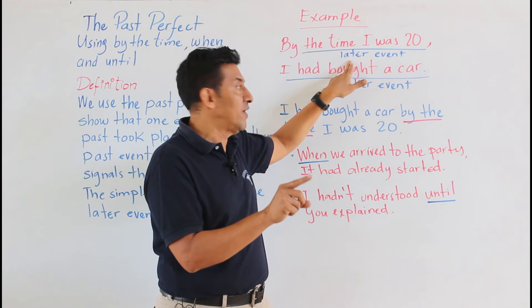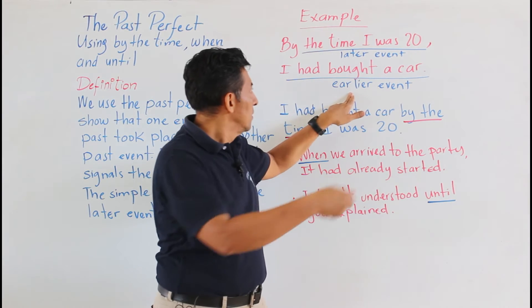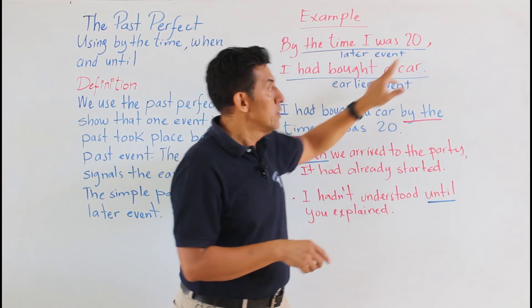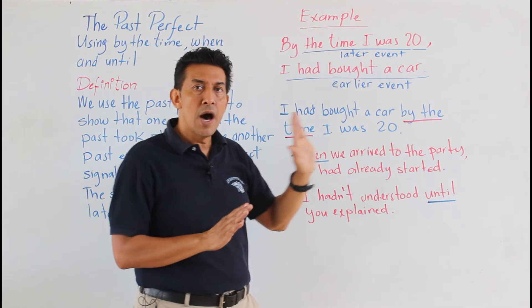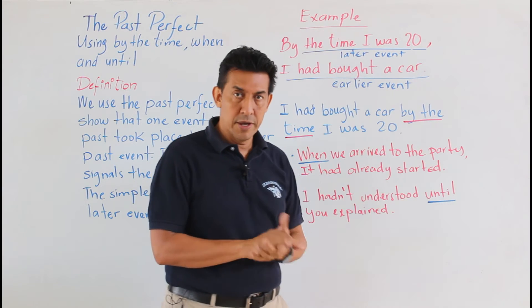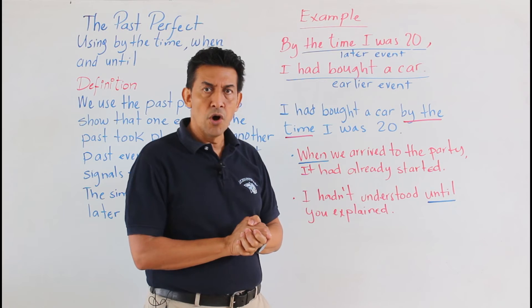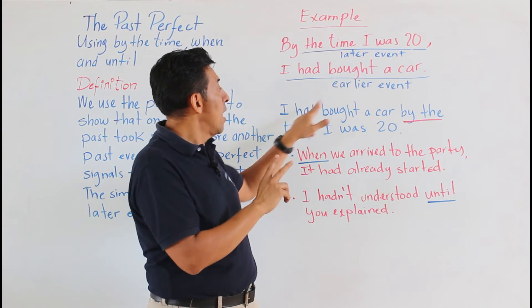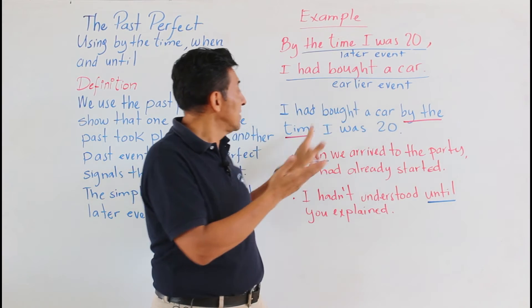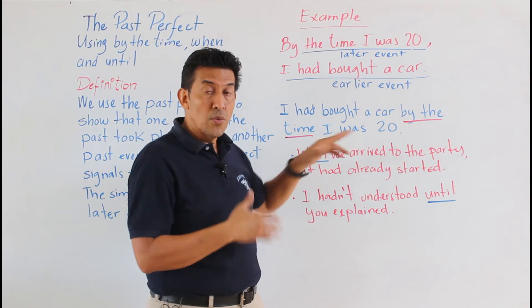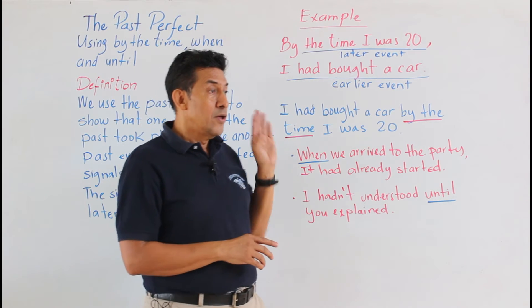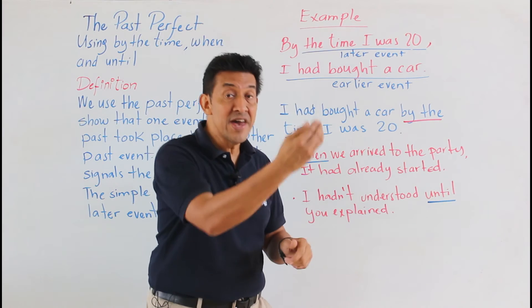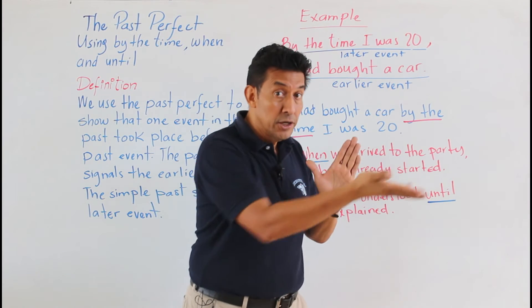What is the earlier event? You had bought a car. So before you were twenty, you had bought a car. You can also read it the other way: 'I had bought a car by the time I was twenty.' So what happened is that you first bought a car and then you turned twenty.